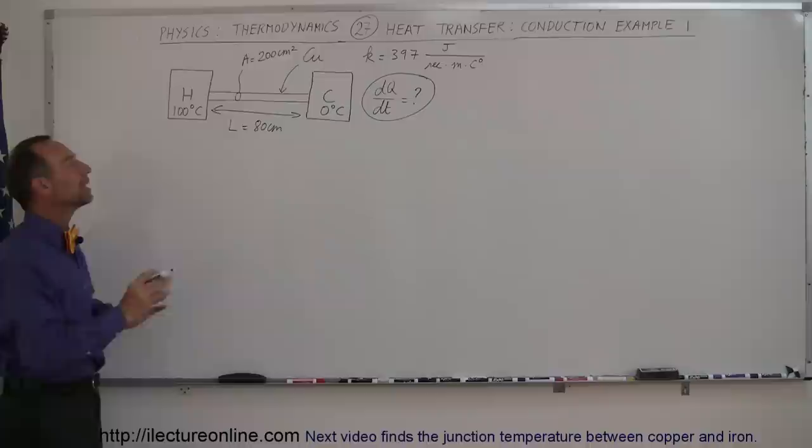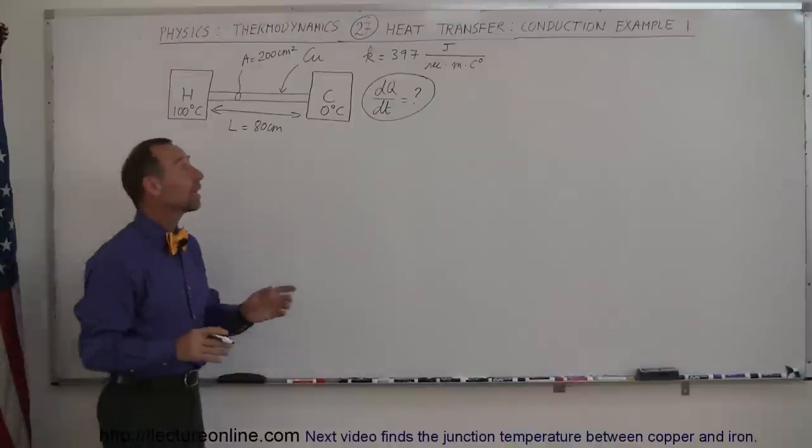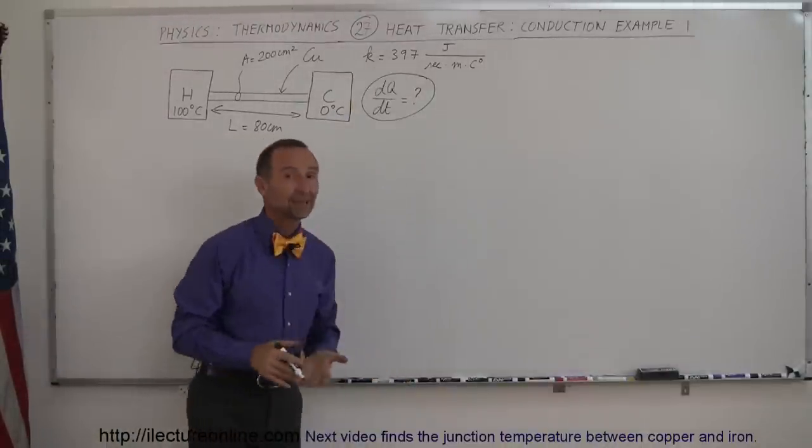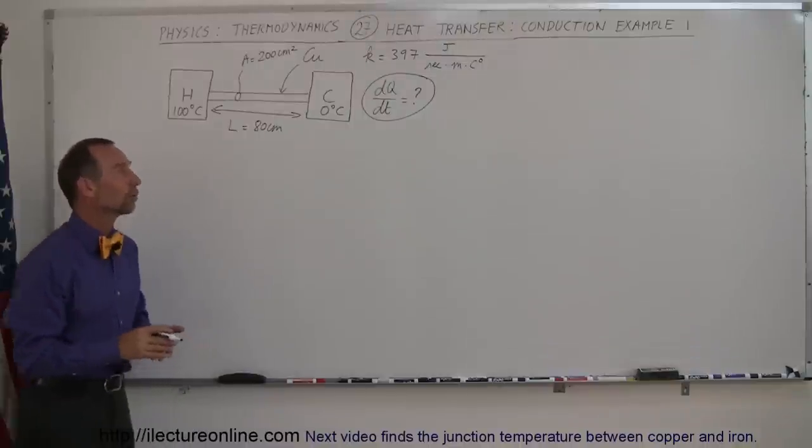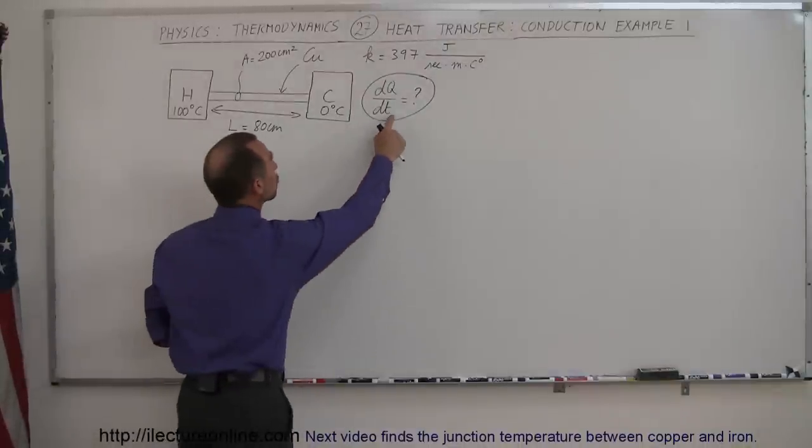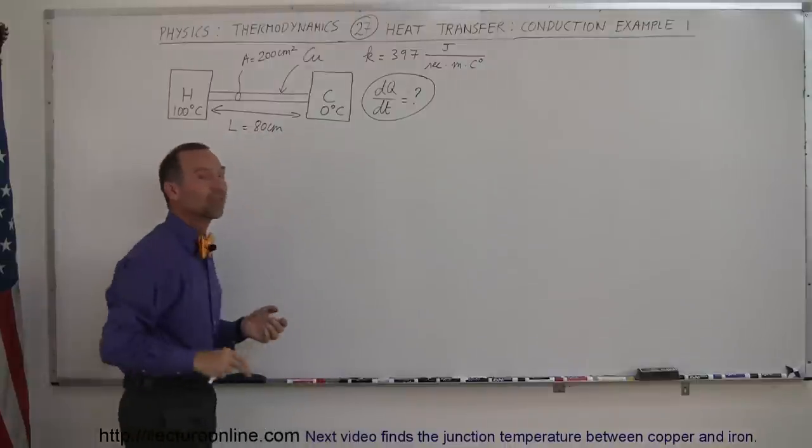And let's assume that we ignore any radiation effects. The conductivity constant for copper is 397 joules per second per meter per degree centigrade, or per centigrade degree. And what we're trying to find is the amount of heat transferred across that interface, the dQ/dt.